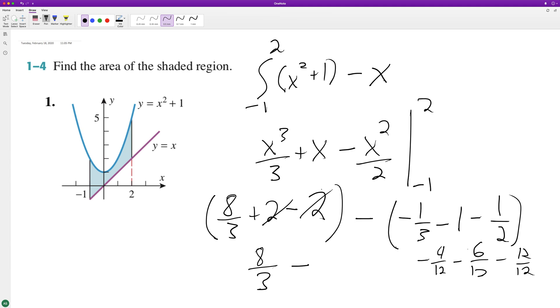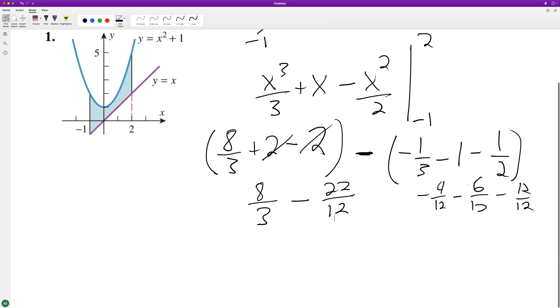That becomes ten, and this becomes positive with the distribution. Twelve plus twenty-two over twelve. Common denominator is twelve.